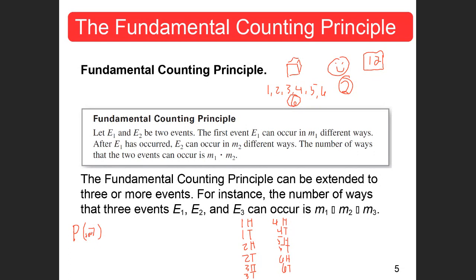If I tossed two dice, there are going to be 6 times 6, or 36 different outcomes. Now I just think about how many different ways could it end up being a 7. You could get a 6 and a 1, or a 1 and a 6 — those add up to 7, so there are two ways. The probability would be 2 out of 36, or 1 out of 18. But today we're just talking about sample space — there would be 36 different outcomes.